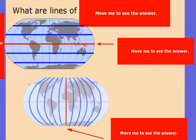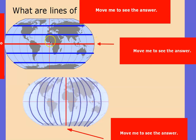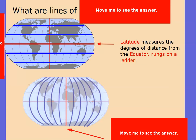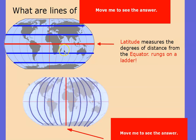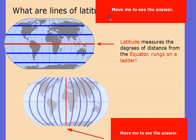Now that you know the prime meridian and the equator, let's learn more about these lines that move from east to west and these lines that move from north to south. What do you believe these lines that move from east to west are called? We know that the one in the middle is the equator, but the blue lines that run north and south of it from east to west are known as lines of latitude. Latitude lines measure the degrees of distance from the equator. Think of rungs on a ladder as your hint — they're the short lines running across the globe, measuring the distance north or south from the red equator line.